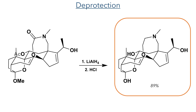To complete the synthesis, the authors carried out the final reduction and deprotections. Lithium aluminium hydride reduced both the acetate and the amide, and the acetal was converted to the hemiacetal using hydrochloric acid. This produced the target compound in an 89% yield.